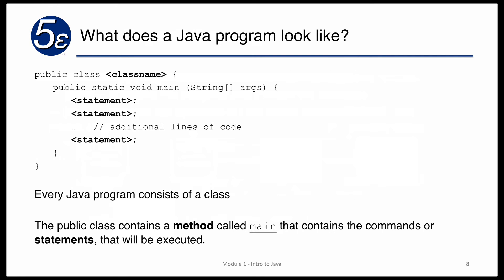So what does a Java program look like? There will be a public class followed by a class name. It's important to note that everything in Java is case sensitive, so make sure you know how things are spelled in terms of classes, variables, and method names. We will have a method — in this case the main method — and within the main method we will have various statements, which are the actual code that gets executed. Notice that each semicolon ends a statement, and braces act as blocks of code for a given method and class.